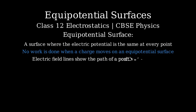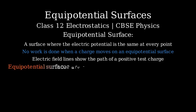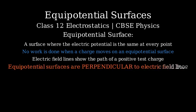Remember that electric field lines represent the path along which a positive test charge would move in an electric field. The key relationship to understand is that equipotential surfaces are always perpendicular to electric field lines.